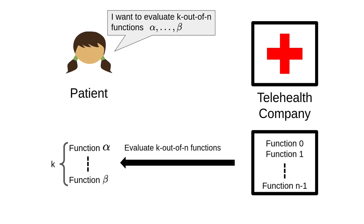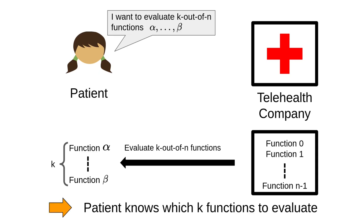That is, the patient wants to evaluate k out of n public functions to which the parties have some private inputs. I emphasize that the patient knows which k functions she wants to evaluate. In this talk, I present our k out of n garbled circuit-based construction, which yields a significant concrete improvement over the state-of-the-art, also garbled circuit-based construction.